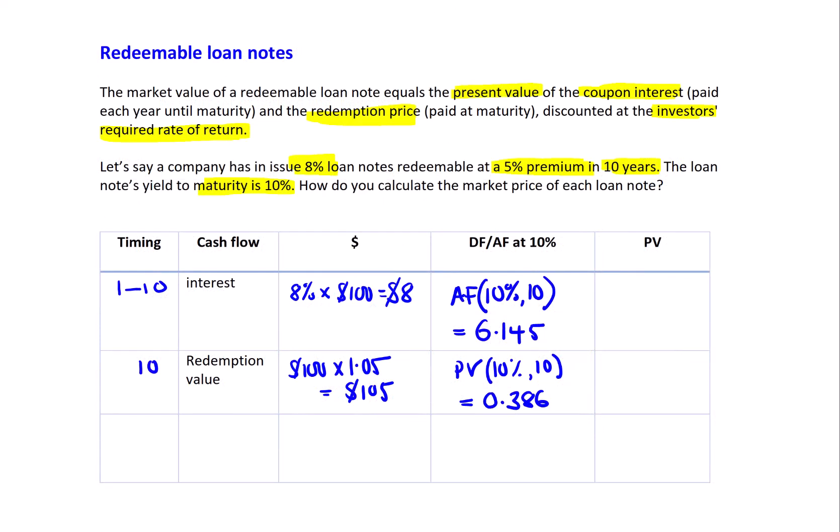We now simply times the cash flow by the discount factors. We'll be timing the 8 by the 6.145 and then the 105 by the 0.386. That gives 49.16 and 40.53. You now simply total those up to get the market price of the loan note, which is 89.69.